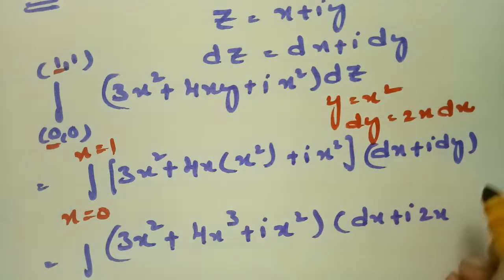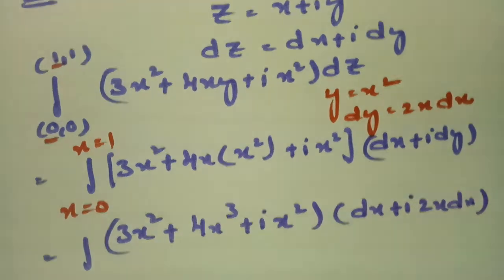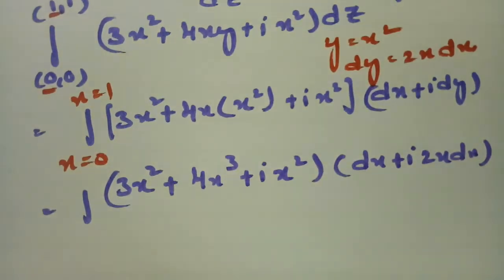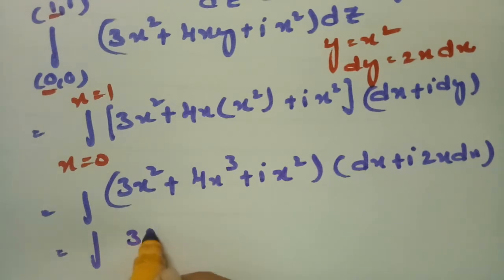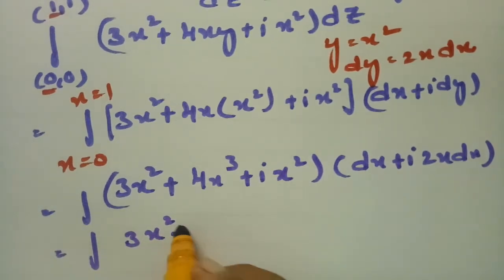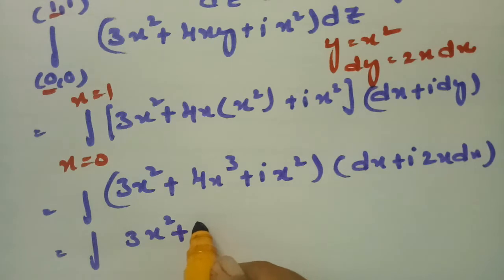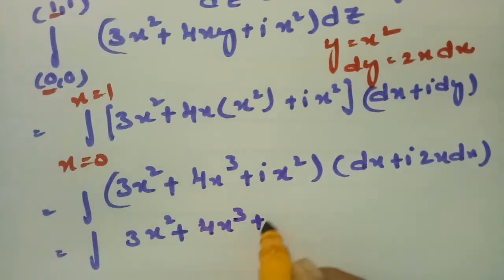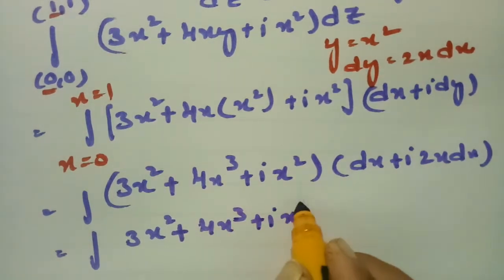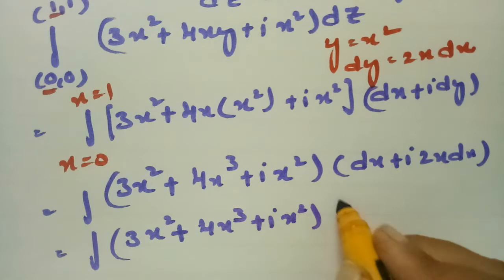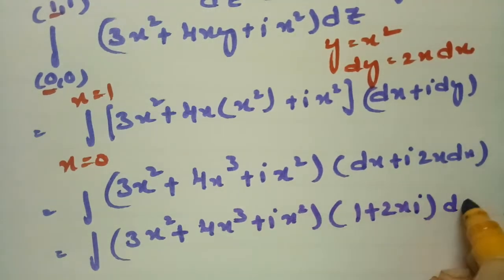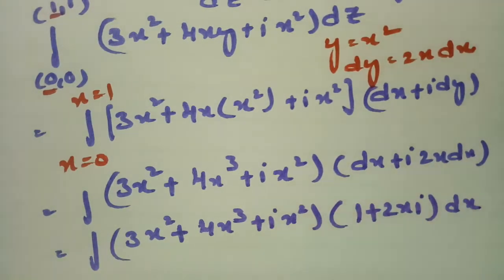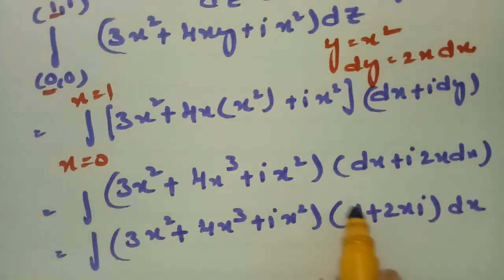So the expression becomes (3x² + 4x³ + i·x²) and taking dx common from dz gives (1 + 2xi) dx. Now I multiply each and every term out.